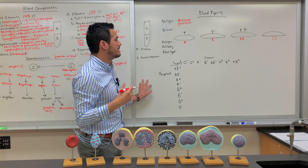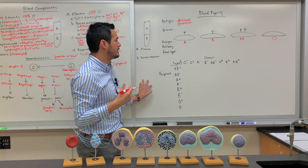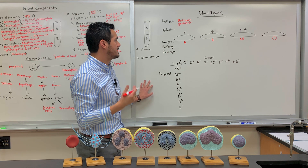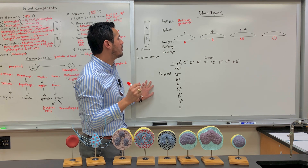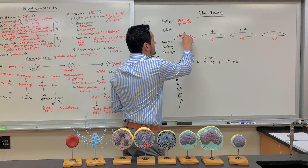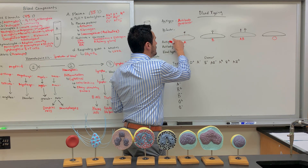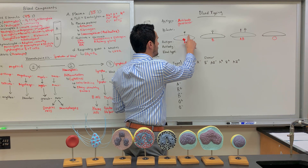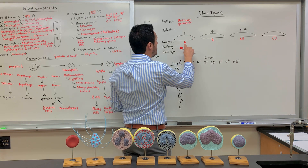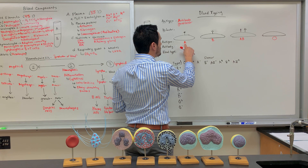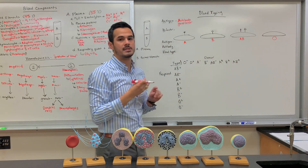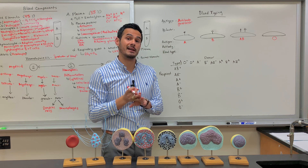Now that we understand about antigens — these are the proteins that are embedded within the phospholipid bilayer — the next thing to consider is that someone can be type A positive or A negative.